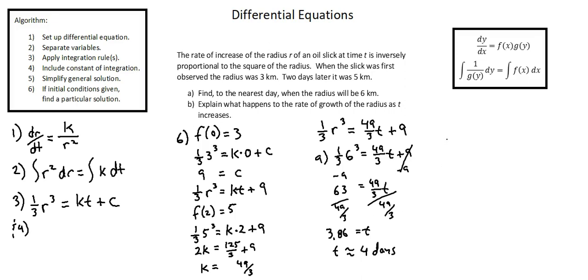And for part b, explain what happens to the rate of growth of the radius as t increases. Let's look back at the differential equation in step one. dr/dt, the change in radius with respect to time, equals some constant of proportionality over the square of the radius. We know the constant of proportionality we've calculated as a positive value. In other words, the change in radius is positive, which means the radius is continually growing. Our requirement is to evaluate the rate of growth. Notice that radius squared is in the denominator.